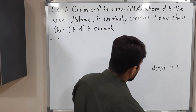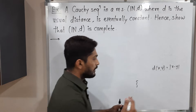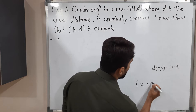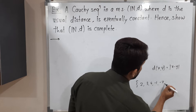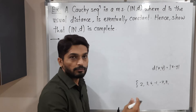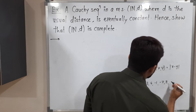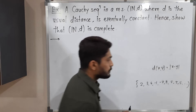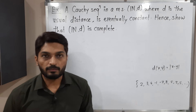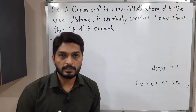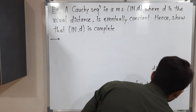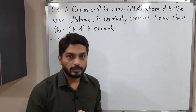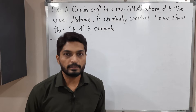Eventually constant means a sequence whose first few terms can be different — just like 2, 3, 4, minus 1, minus 7, 8 — but after a few terms, all remaining terms will be same, just like 5, 5, 5, 5, 5. So that is called an eventually constant sequence. We have to prove every Cauchy sequence is eventually constant. I will take any arbitrary Cauchy sequence and prove that it is eventually constant.